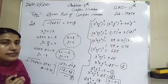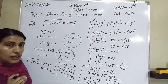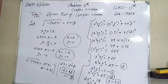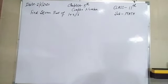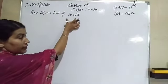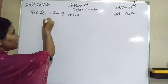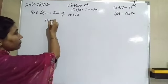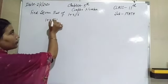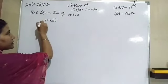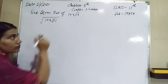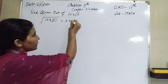Let us take one more example. We have to find the square root of 1 plus 4√3·i. First convert it into the form of a complex number: the square root of minus 3 can be written as √3·i. So the number is 1 plus 4√3·i. Take its square root equal to x plus iy.